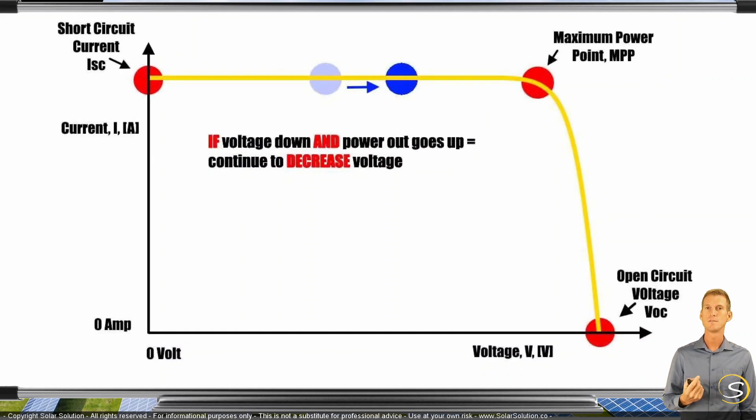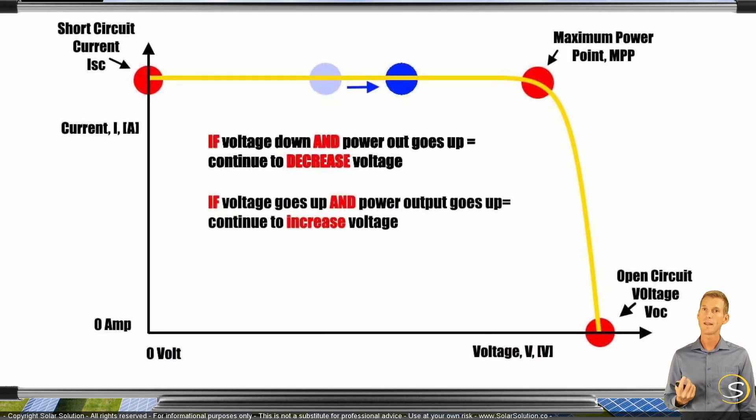So then it follows the second set of rules whereby it says, well, if I would increase the voltage, if the voltage goes up and the power output goes up, it will continue to increase the voltage. And this is the core essence. This is the core operating principle of an MPPT solar charge controller.